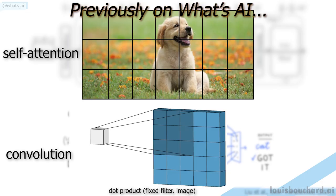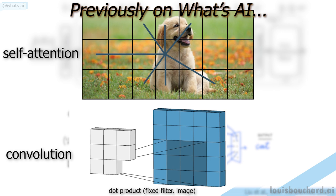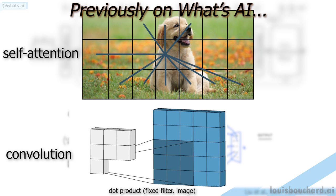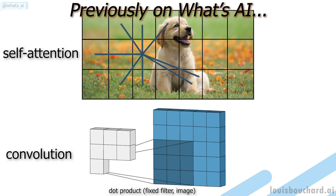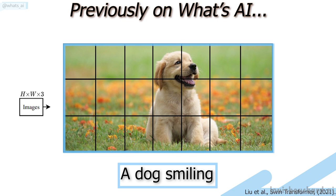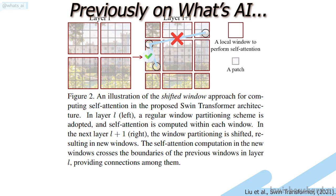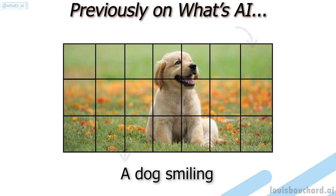On the other hand, Transformers are a promising architecture due to the self-attention mechanism capturing global interactions between contexts for each image, but have heavy computations that are not suitable for images. Instead of using CNNs or Transformers, they created the same UNet-like architecture with both convolution and attention mechanisms — more precisely using the Swin Transformer architecture. I won't enter into the details of the Swin Transformer as I already covered this architecture a few months ago and explained its differences with CNNs and classical Transformer architectures used in natural language processing.